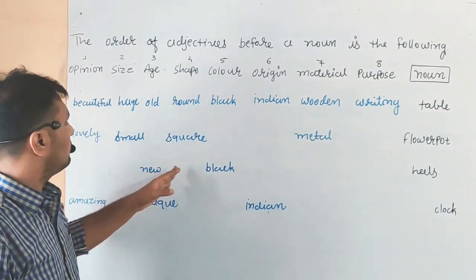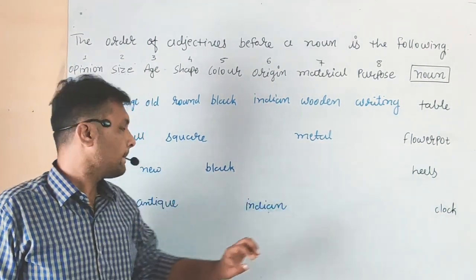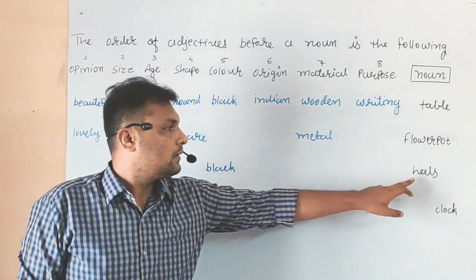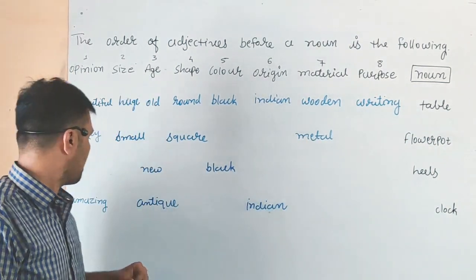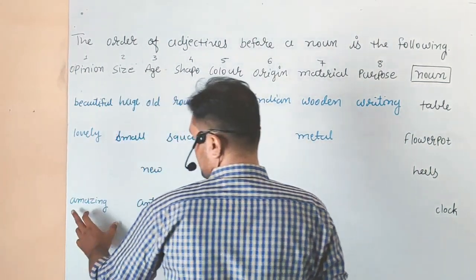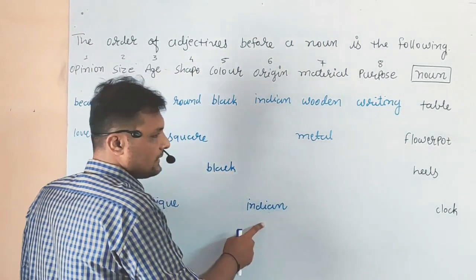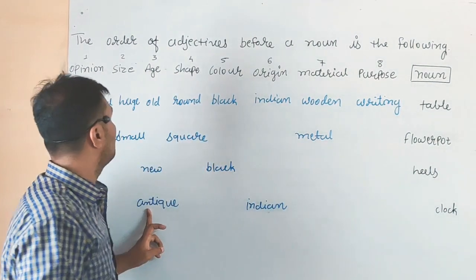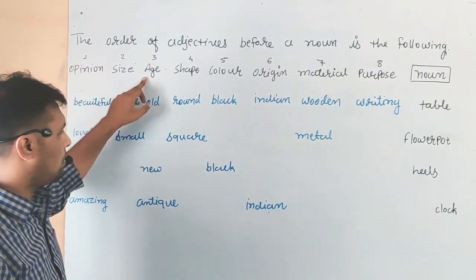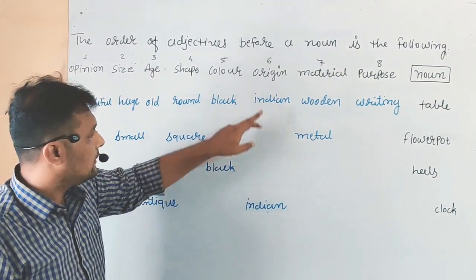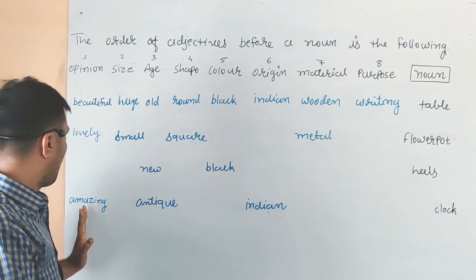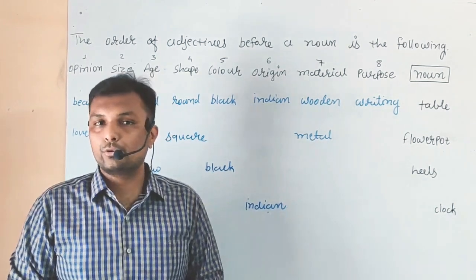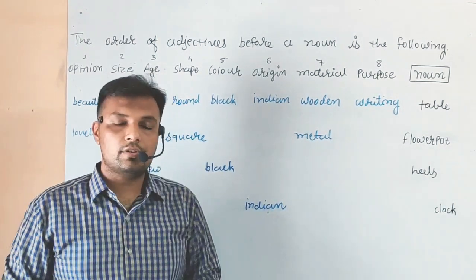Third example: New Black Hills. New is Age, Black is Color. This is correct. Fourth example: Amazing Antique Indian Clock. Amazing is our Opinion, Antique is in Age, Indian is in Origin. So this is how the adjective orders they follow.